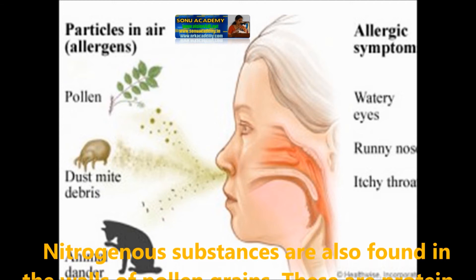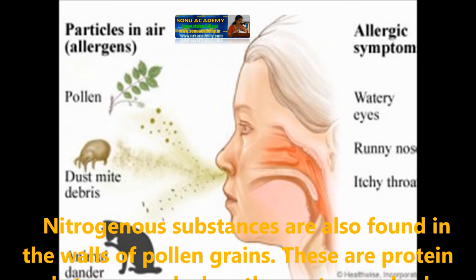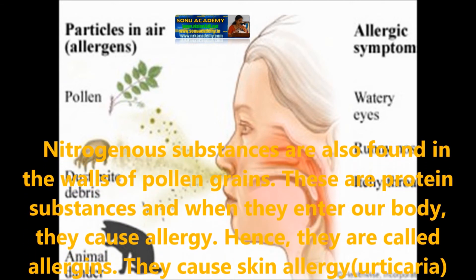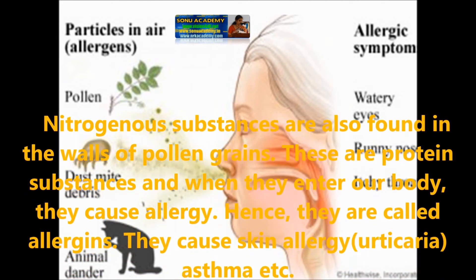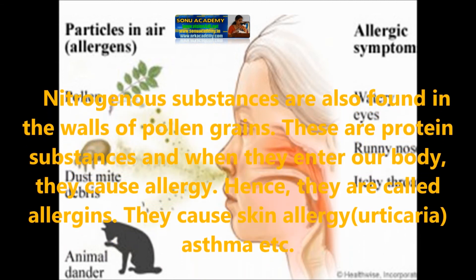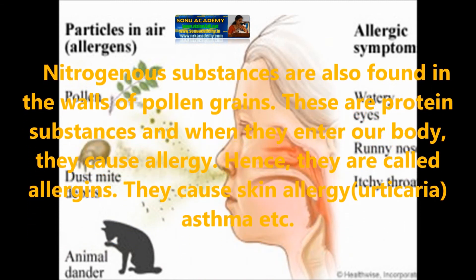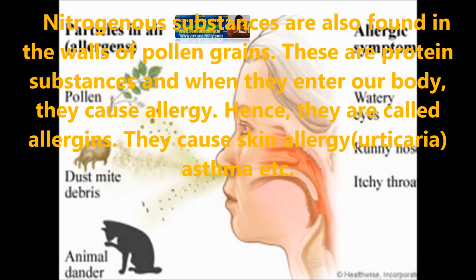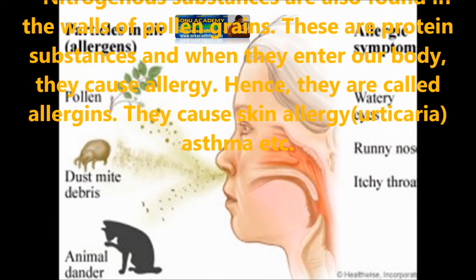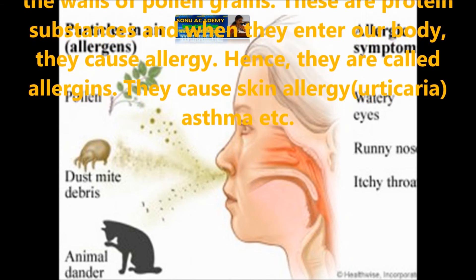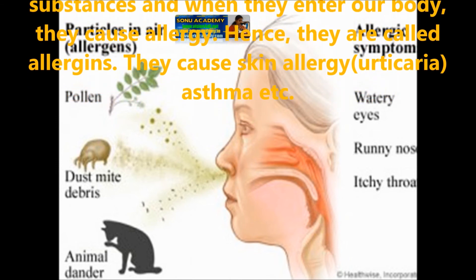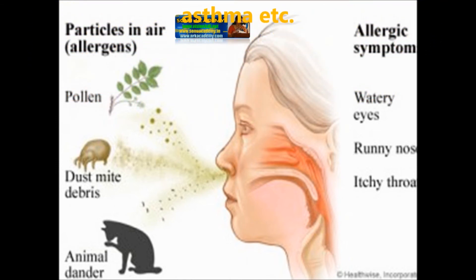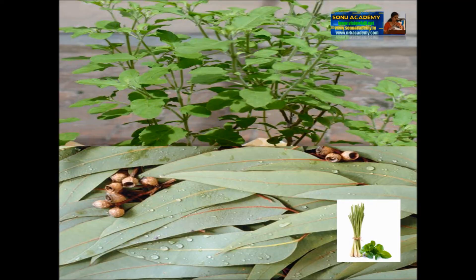Nitrogenous substances are also formed in the walls of pollen grains. These are protein substances, and when they enter our body they cause allergy. Hence they are called allergens. They cause skin allergy, asthma, etc.